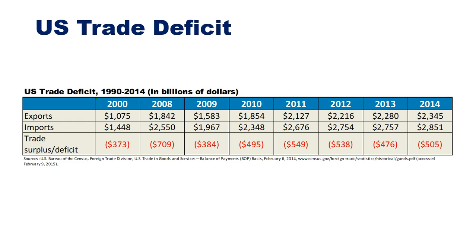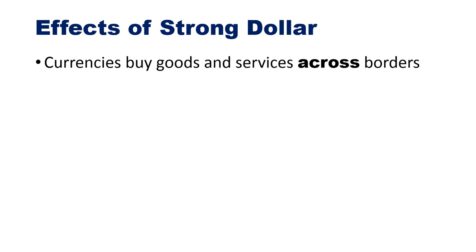The data shows what we export in total from 2000 to 2014, what we import, and what a trade surplus or deficit would look like. However, this is a little misleading — if you looked at it you might say 'that's bad for us,' but is it really? So let's talk about the effects of the strong dollar. Currencies are used to buy goods and services across borders — dollars, rubles, euros — and the strength of a currency affects how much it can buy.